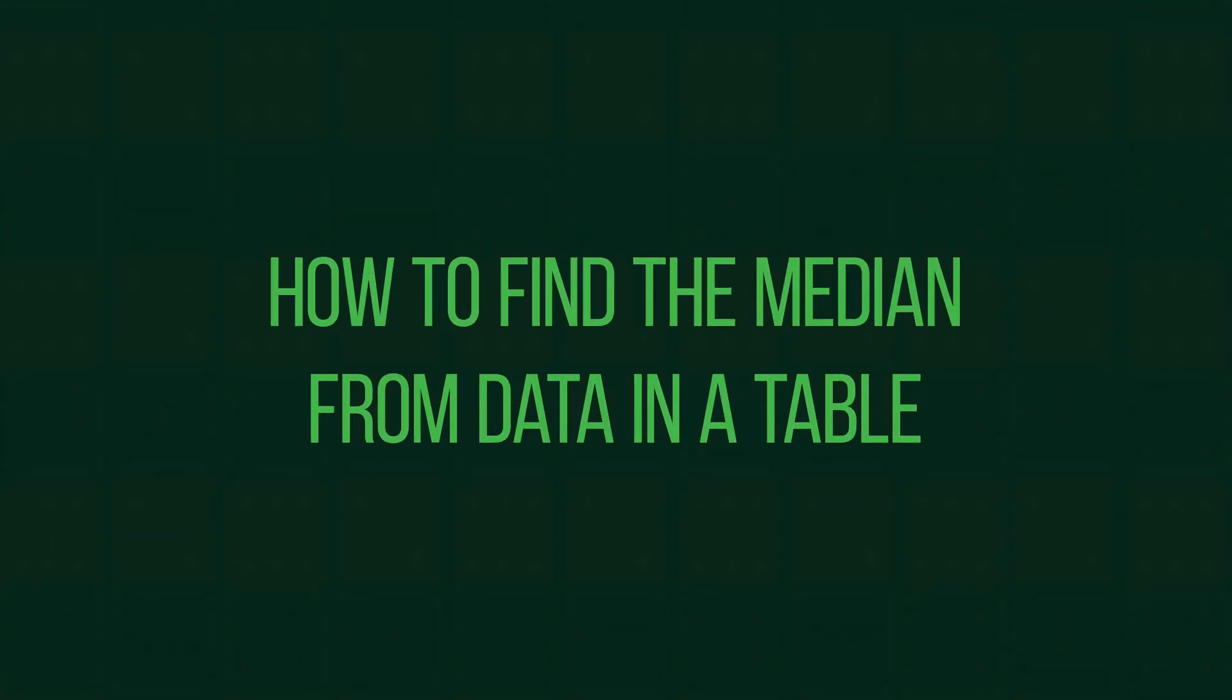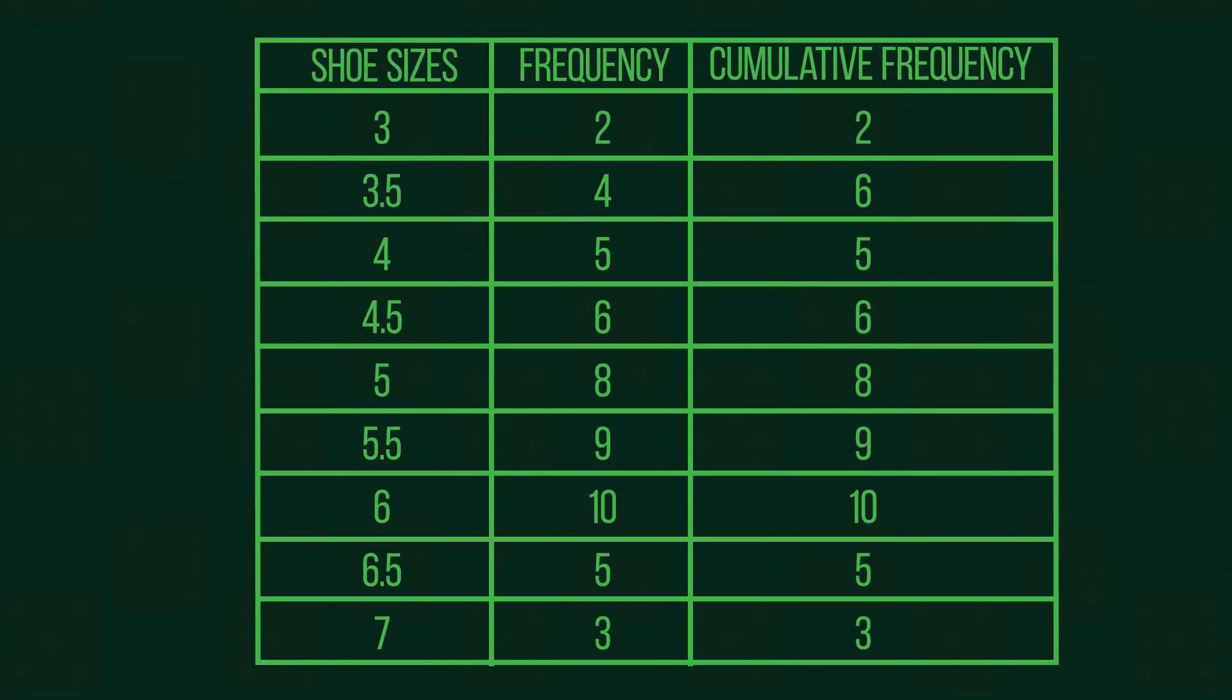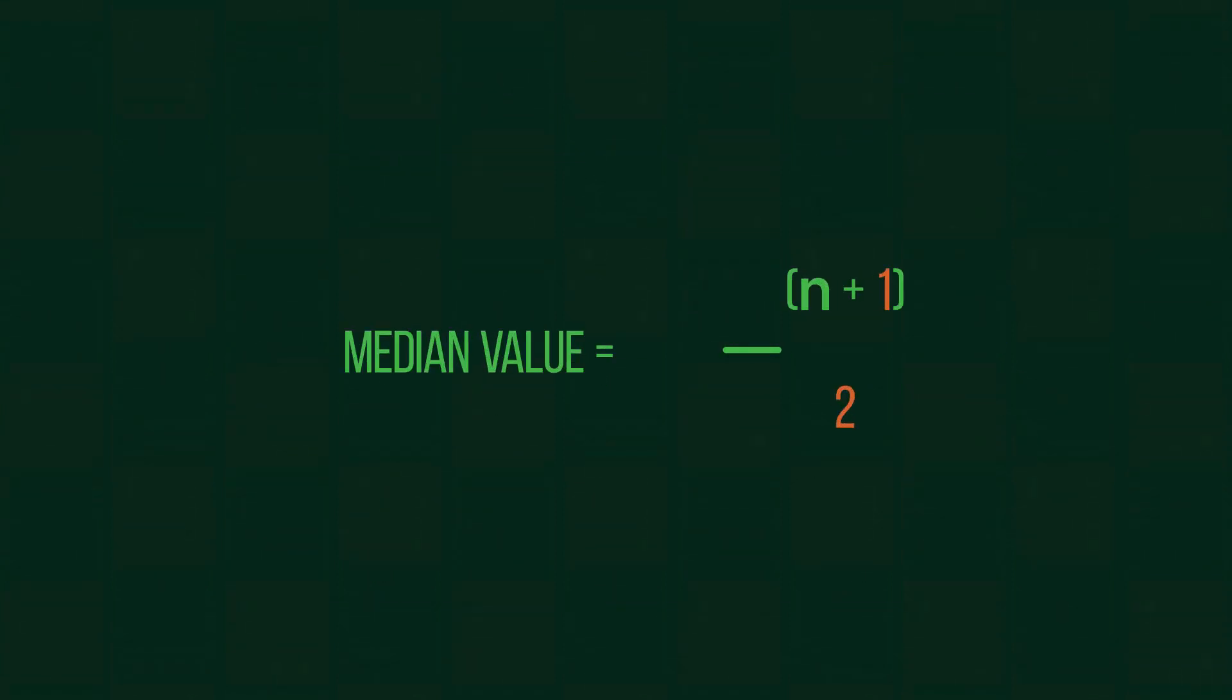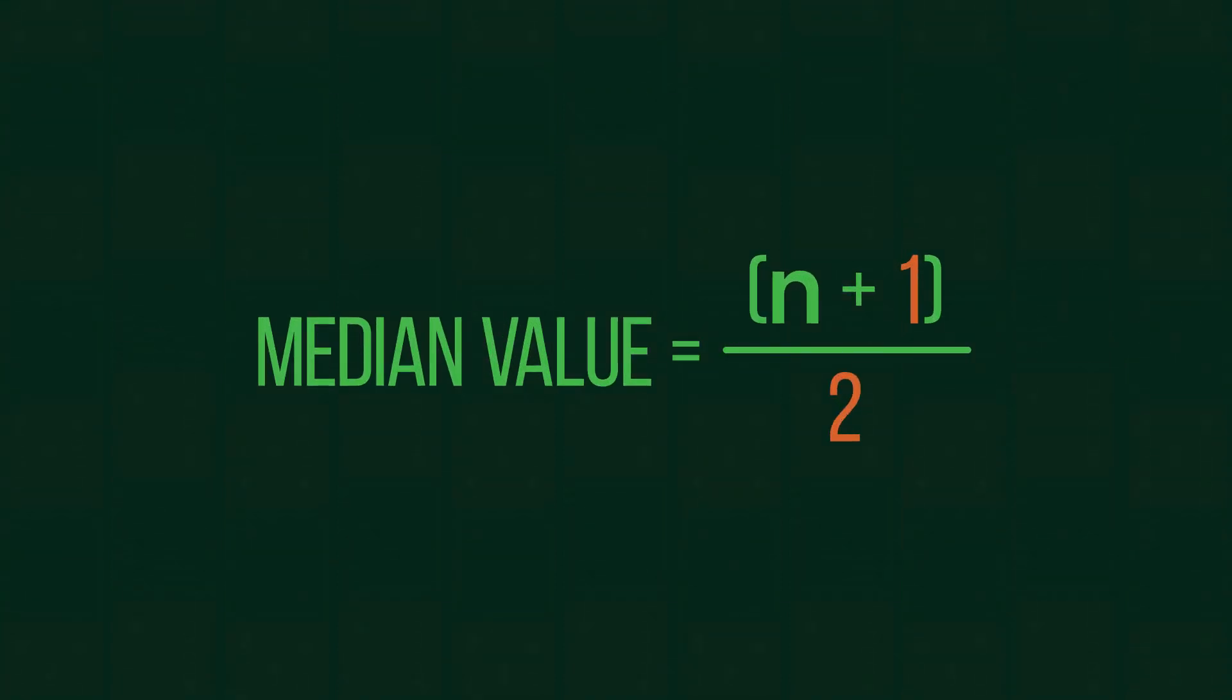It can sometimes be off-putting to use the median when there is a large amount of data because it all has to be ordered. However, when finding the median from a data set in a frequency diagram, this problem can be avoided by using this equation to find the middle value's position in a set of data.